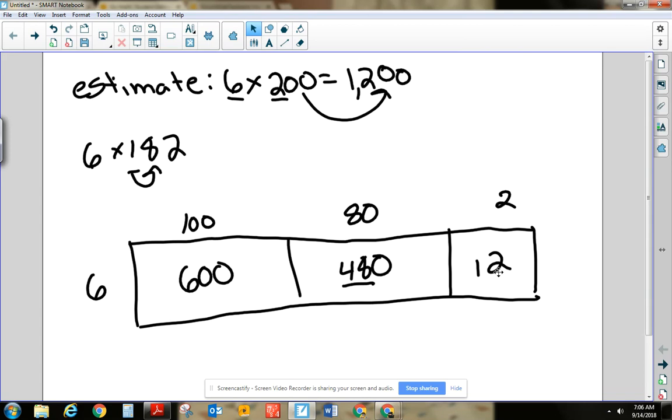Well, now I just need to add all these together. 600, 480, and 12. Add them together. Now if my place value is lined up, 2. 9, 6 plus 4 is 10. All right. Well, kind of close. 1200, 1092. It's in the same ballpark. I'm happy with that. So this is how you solve multiplication with partial products.